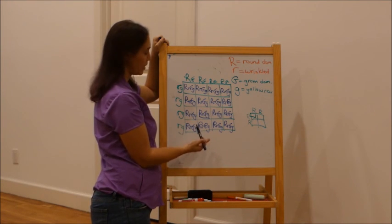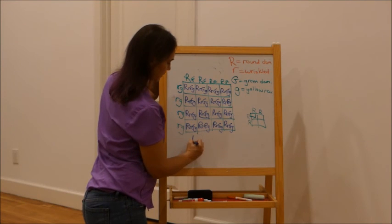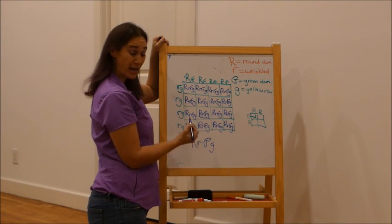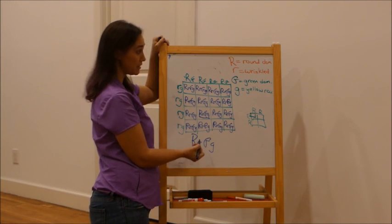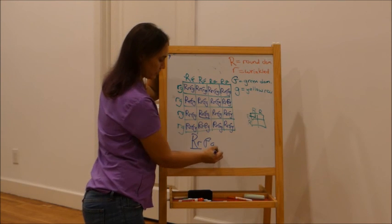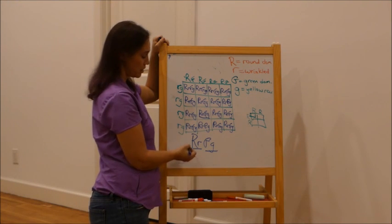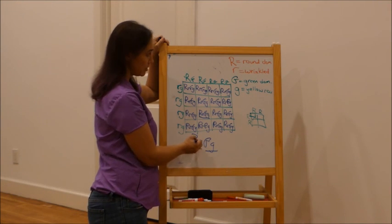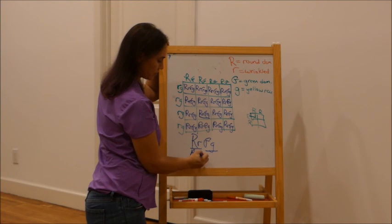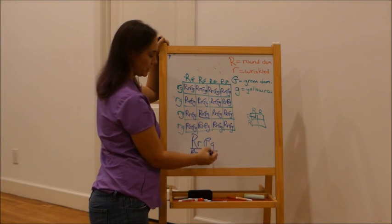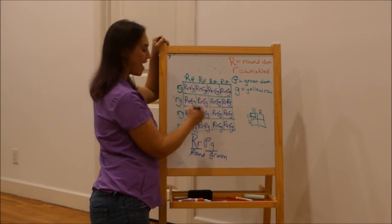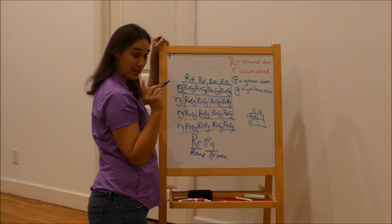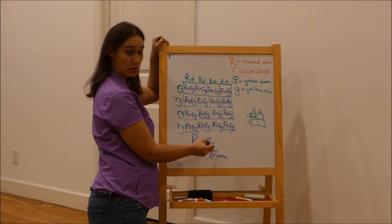All 16 offspring from these parents have the exact same genotype — they're all capital R little r, capital G little g. They're all heterozygous for each trait: heterozygous for shape and heterozygous for color. The phenotype: we have a dominant allele for shape so it's round, and a dominant allele for color so it's green. Every offspring is round and green, but heterozygous for both traits.